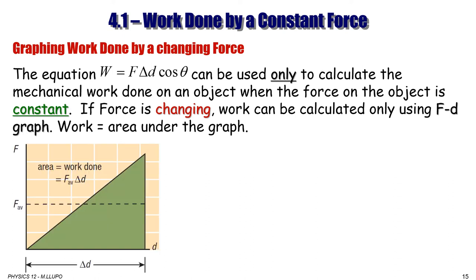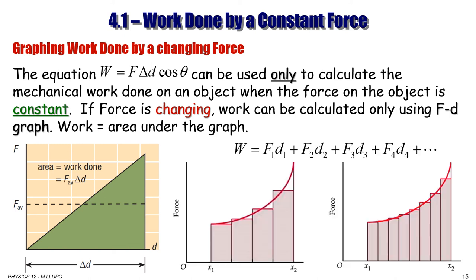The equation W = F·Δd·cosθ can only be used when the force is constant. If the force is changing, work must be calculated using the graph — the area under the graph is the work done. For a triangle, use half base times height (average force times displacement). For a more complex curve, split the area under the curve into small rectangles. The smaller the rectangles, the more accurate the calculated work.